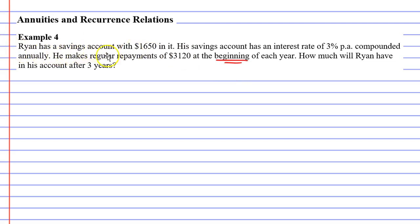Ryan has a savings account with $1,650 in it. His savings account has an interest rate of 3% per annum compounded annually. He makes regular repayments of $3,120 at the beginning of each year. How much will Ryan have in his account after three years?